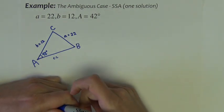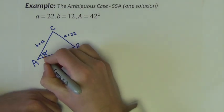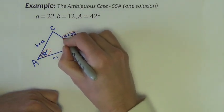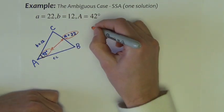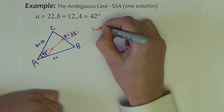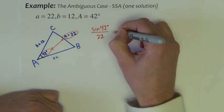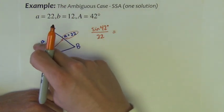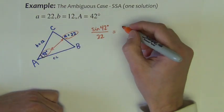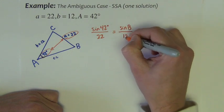Well in this particular setup, notice that we already have a pair across from each other, so we're going to pair these two together. We could say that sine of angle A over side a is equal to, I can't do anything with C's yet because I don't know either of them, but I can say that the sine of angle B over little b.